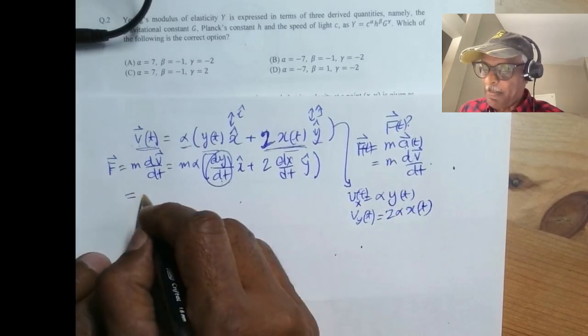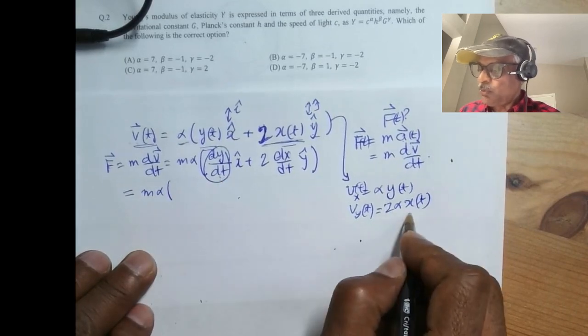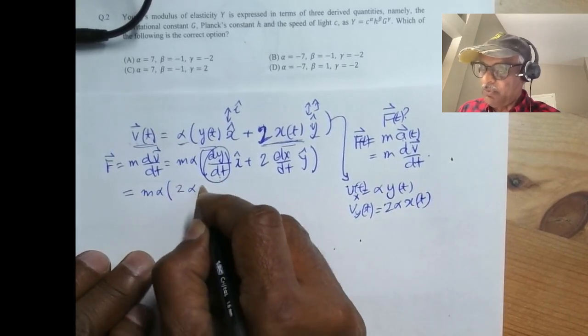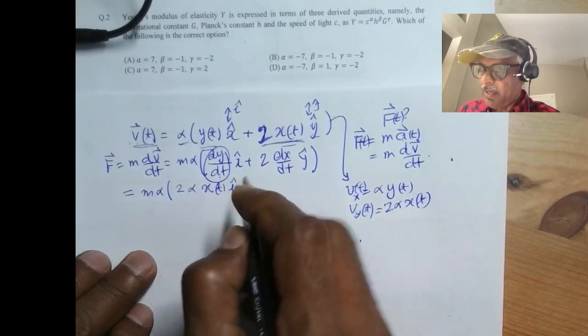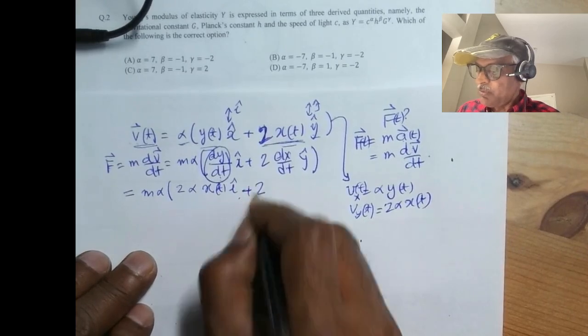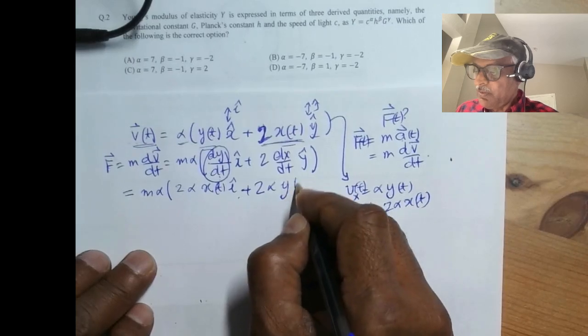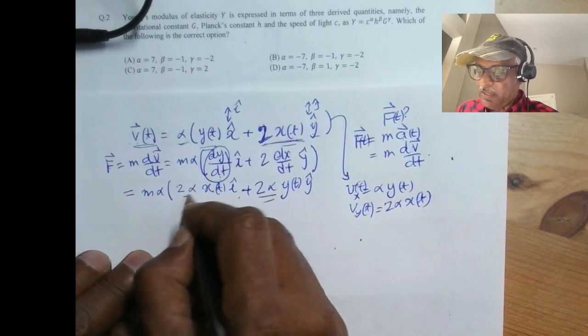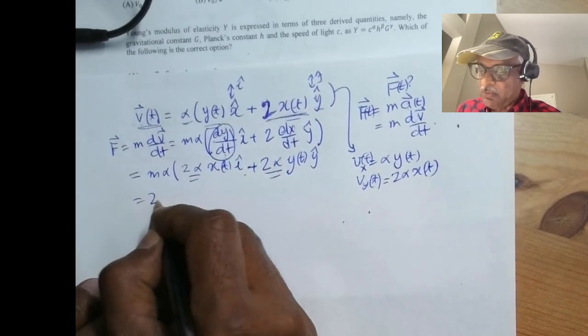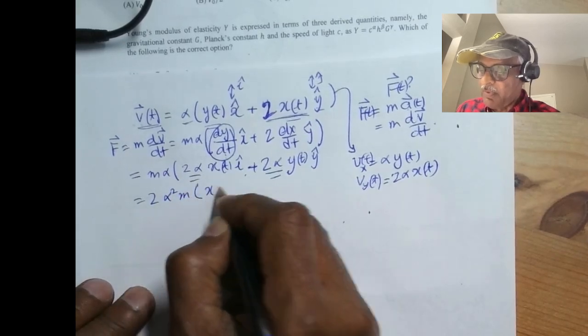m alpha, so vy is going to be 2 alpha xt i hat plus 2 times alpha y of t y hat. 2 alpha comes out, I get 2 alpha squared m x of t i or x hat plus y of t y hat.